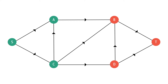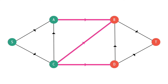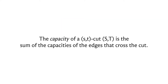Given a cut, we're specifically interested in edges that cross it. An edge from U to V is said to cross the cut if U belongs to S and V belongs to T. In this example, the edges crossing the cut are marked in pink, consistent with that definition. The capacity of a cut is simply the sum of the capacities of all edges that cross it.